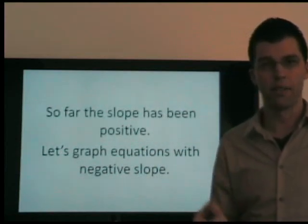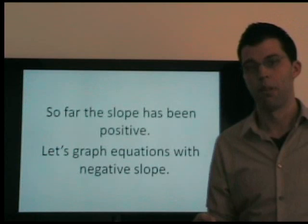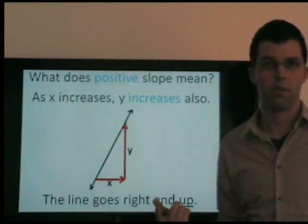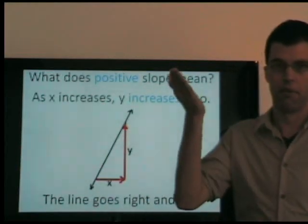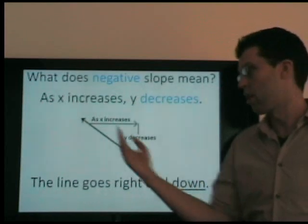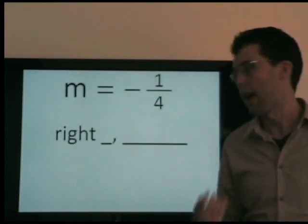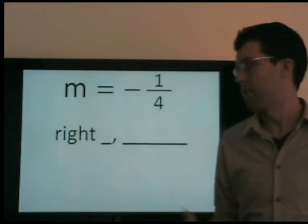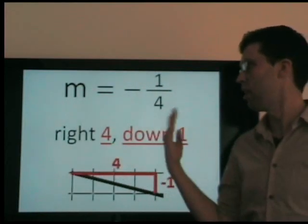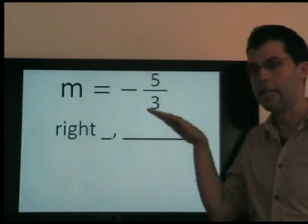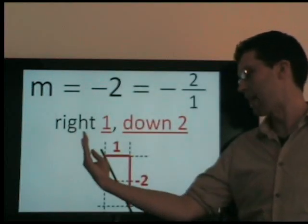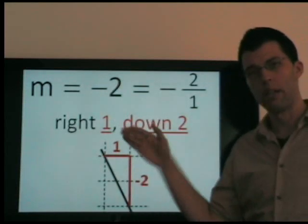So far we've been graphing lines with positive slope. Now we'll graph lines with negative slope. Positive slope means as x increases, y increases — we go right and up. The word negative means opposite, so negative slope means as x increases, y decreases — we go right and down. For example, a slope of negative 1 fourth means right 4 and down 1. Negative 5 thirds means right 3 and down 5. Negative 2 is negative 2 over 1 — right 1 and down 2.